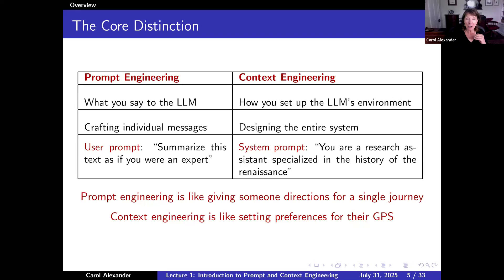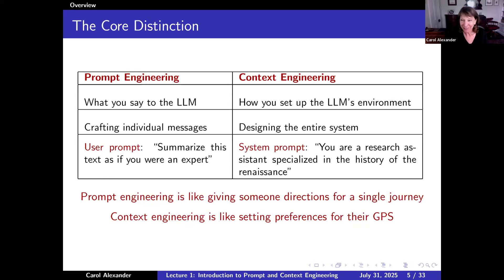Context engineering is distinct from prompt engineering because you don't just have in-conversation context engineering. You can actually build a custom LLM just for you — like a medical LLM or a lawyer's LLM. I've built a couple of teaching and learning LLMs. Prompt engineering is what you say to the LLM — crafting individual messages. For example, a user prompt could be: 'Summarise this text as if you were an expert.' Engineering the prompt is making that user prompt as efficient as possible.